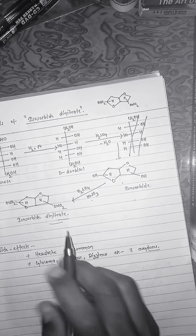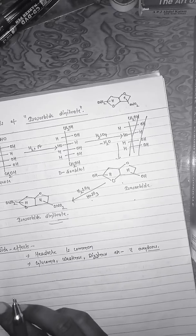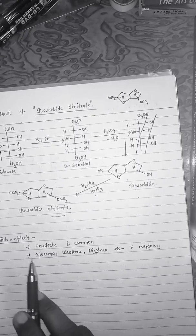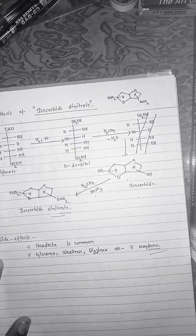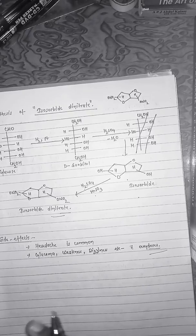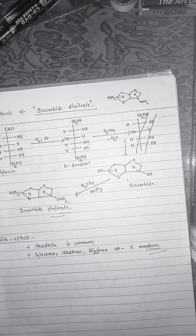This is a simple reaction; you will find all these details in the medicinal chemistry book by S.N. Pandya. Regarding side effects of isosorbide dinitrate: headache is common in patients with angina treated with isosorbide dinitrate. Heavy doses and overdoses may cause glaucoma and weakness. It may also cause dizziness.